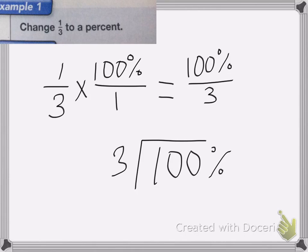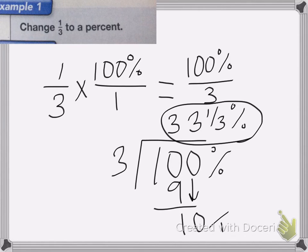3 goes into 10 three times, that's 9. Subtract it, bring down the 0. 3 goes into 10 three times, that's 9. I end up with 1 left over. So I'm going to keep it as a fraction. So it's going to be 33 and 1/3 percent.